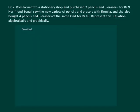Let us read the question. Romila went to a stationery shop and purchased 2 pencils and 3 erasers for Rs 9. Her friend Sonali saw the new variety of pencils and erasers with Romila and she also bought 4 pencils and 6 erasers of the same kind for Rs 18. Represent the same situation algebraically and graphically.